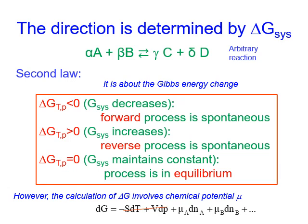If the Gibbs energy change is less than zero, then it is a spontaneous reaction. If it is greater than zero, then it is non-spontaneous, or the reverse reaction will be spontaneous. If delta G is zero, or the Gibbs energy remains constant, then the process is in equilibrium.